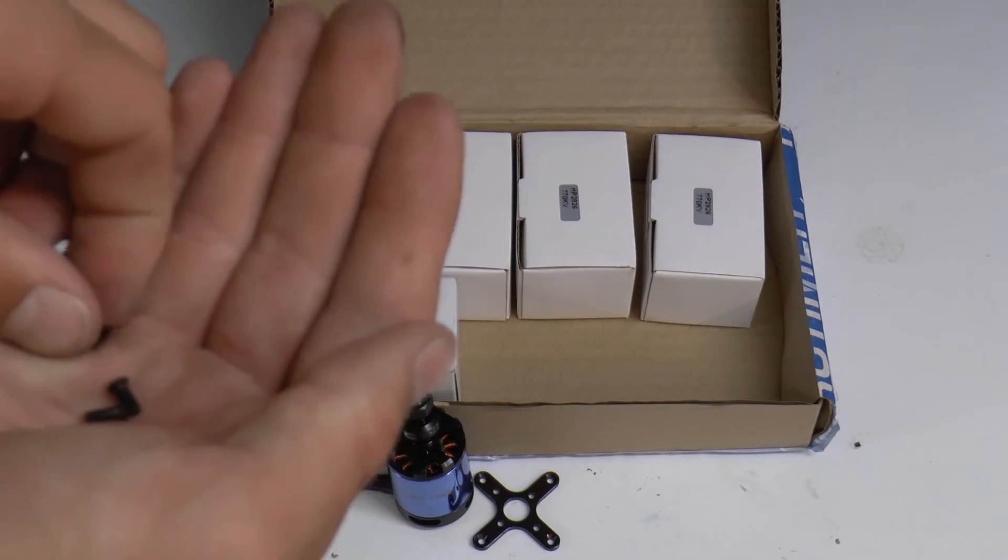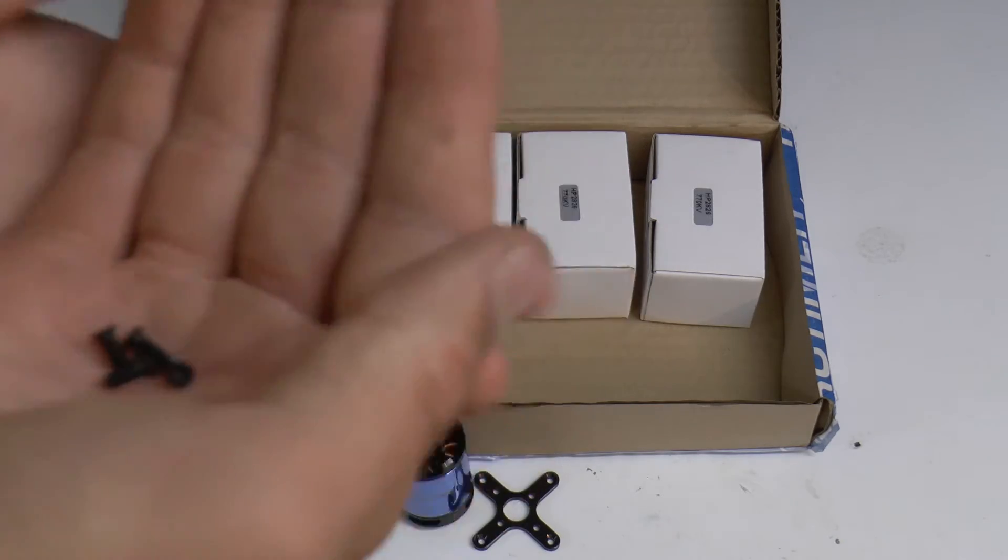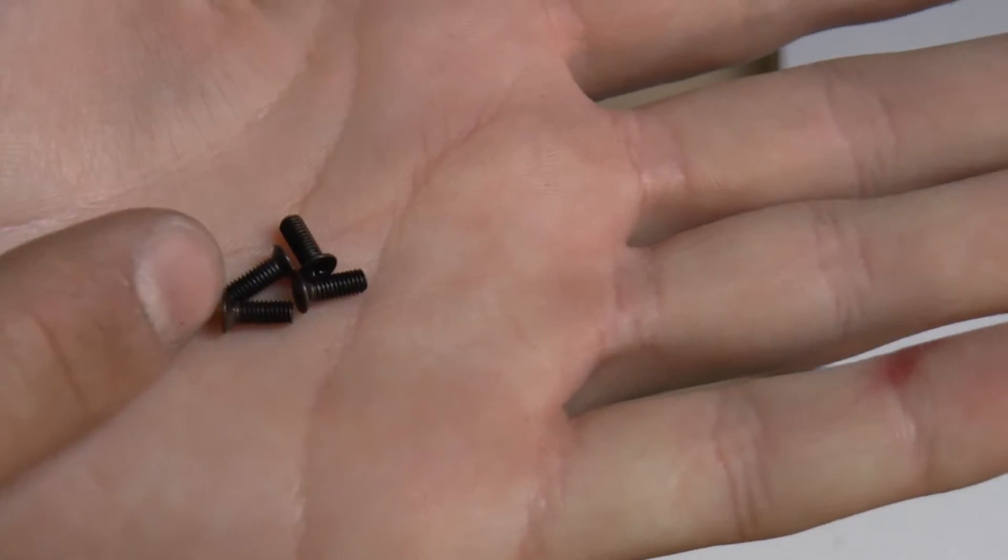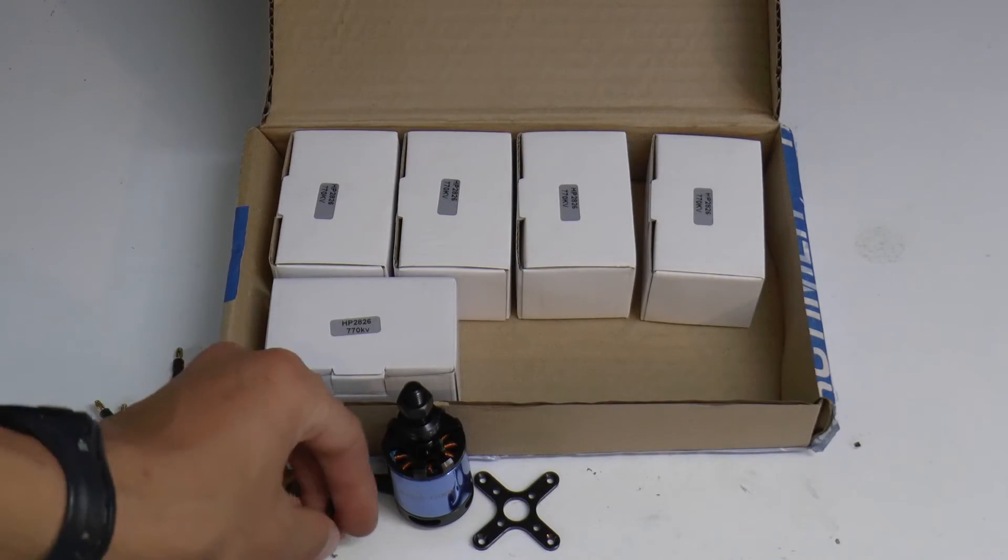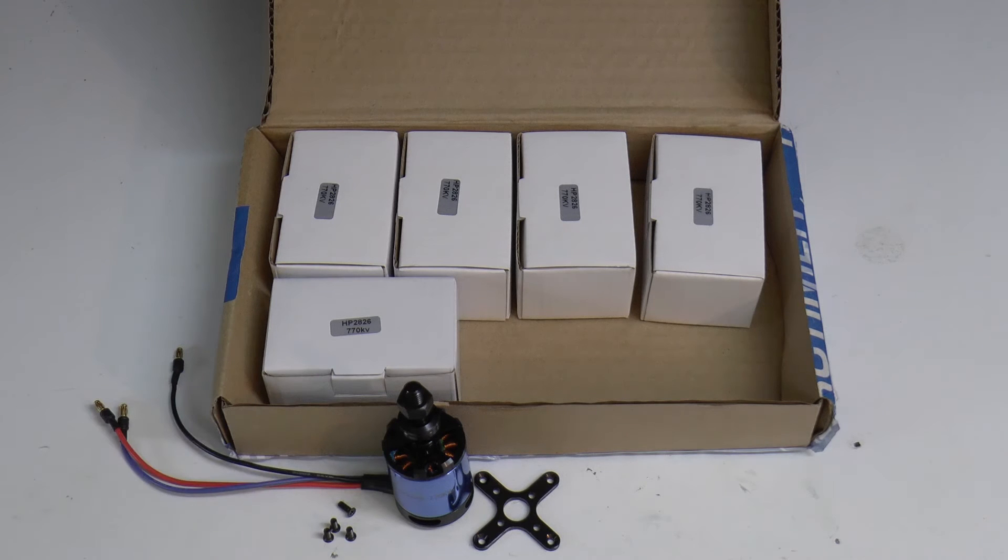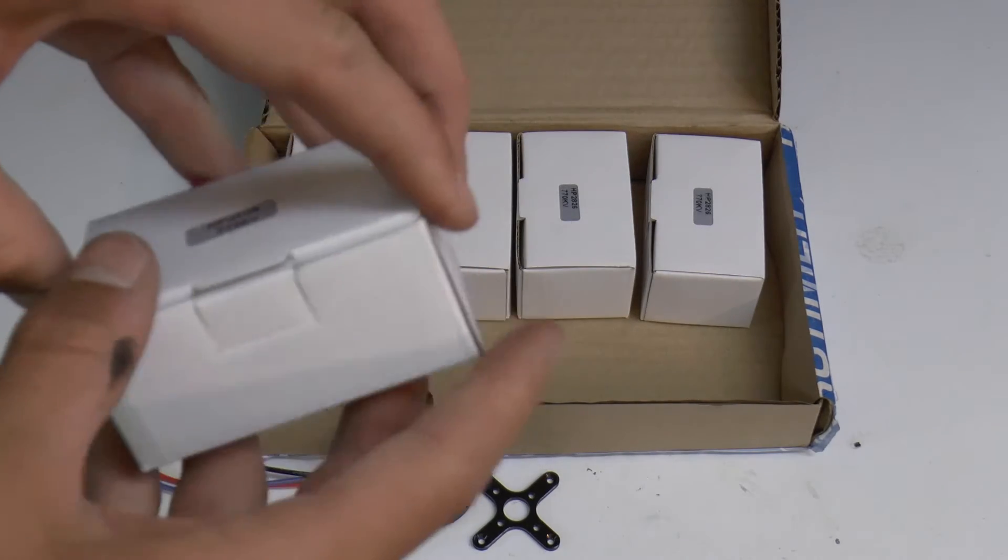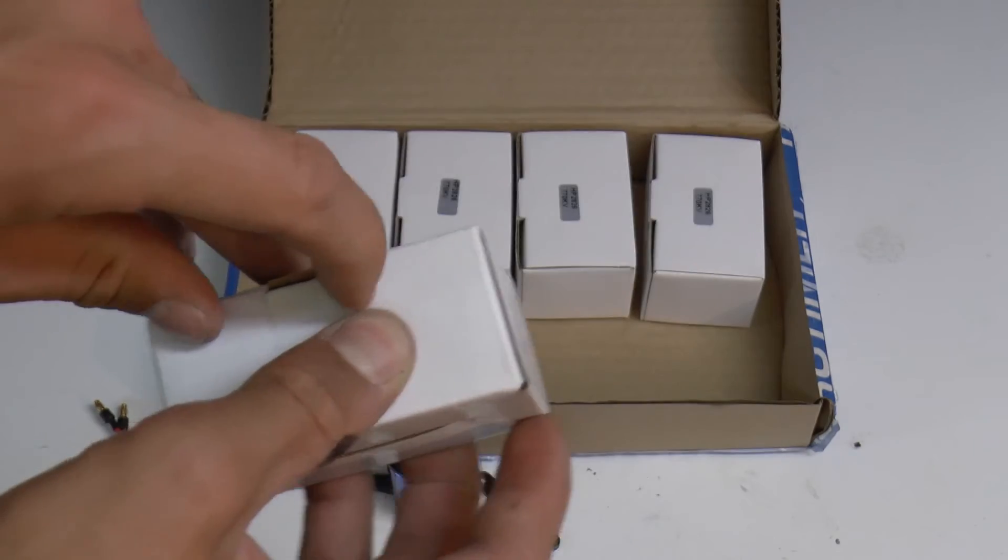Also apparently they only draw 30 amps of current at that power on 4S. Here are some of the screws that they come with as well. So I will be able to run my DJI 30 amp ESCs hopefully safely with these motors. If not I may have to go down to a smaller prop maybe 11 or 10 inch prop.